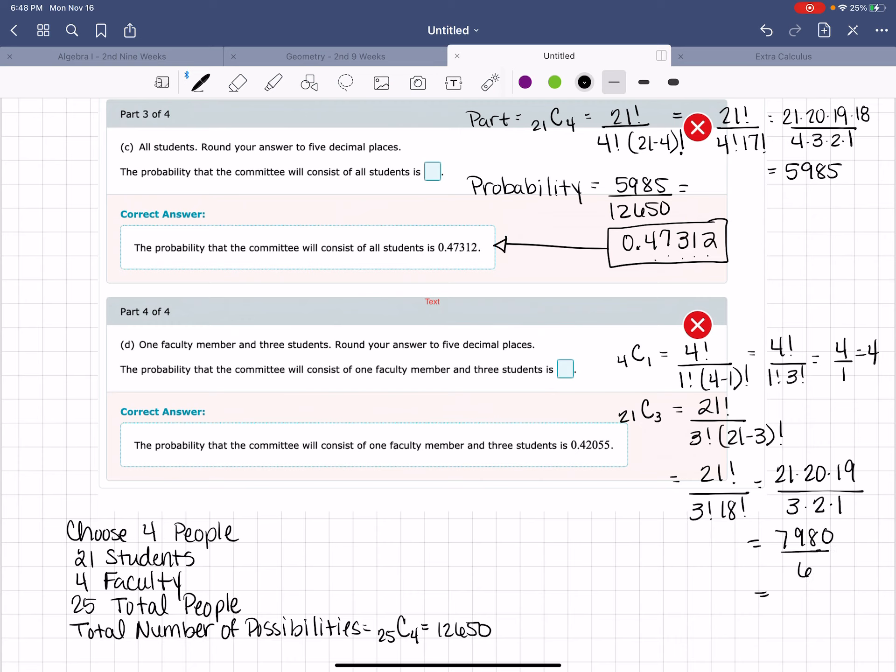7,980 over 6, which is really 1,330. So when I'm calculating that probability.